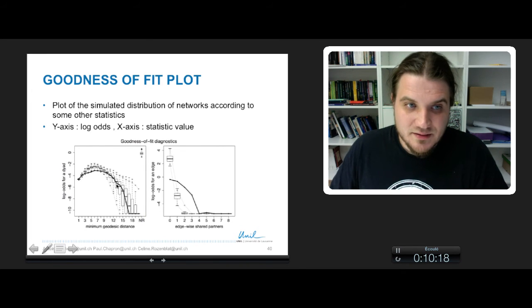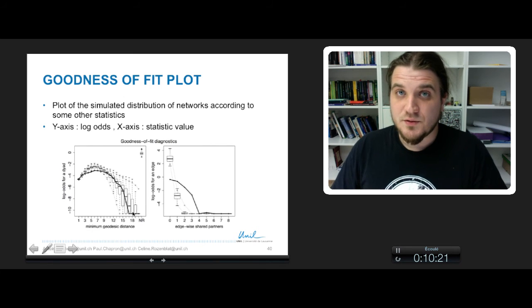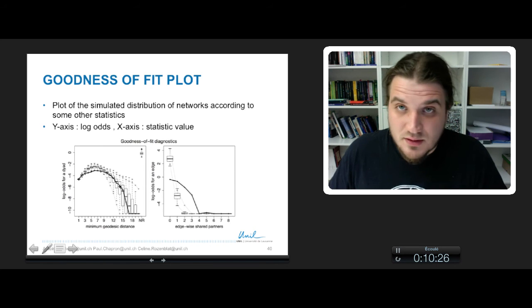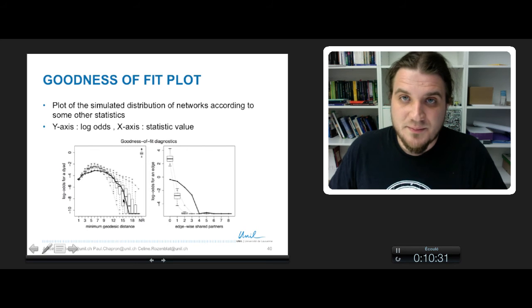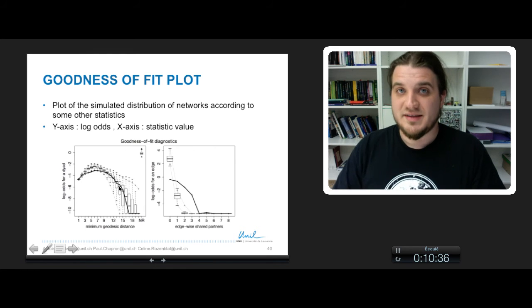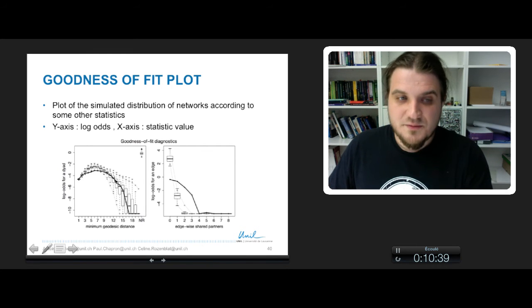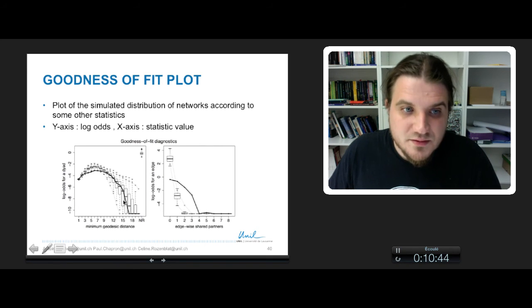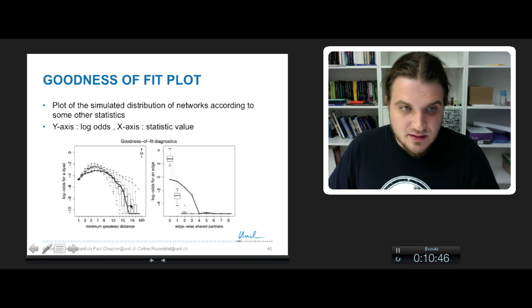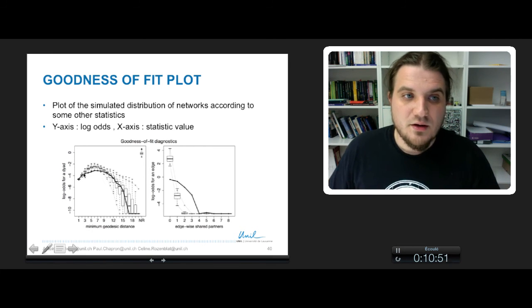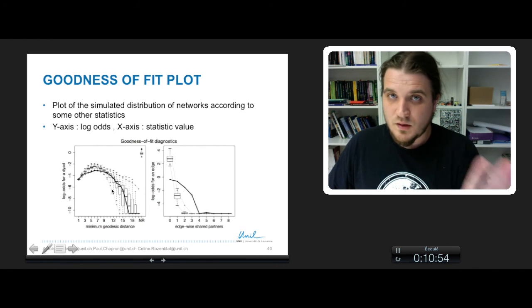An accurate example of a statistic chosen to assess how the distribution of network is centered around the observed network is the minimum geodesic distance. In this kind of plot, the black solid line is the statistics of your network, the network you want to analyze. Around, when you are lucky, around this solid line, the box plot you see here is the distribution of networks that has been simulated. Here, we have a pretty good fit for this statistic, because we observe that the box plot of the family of networks is following the solid line of the observed network. So according to this statistic, the fit is good.